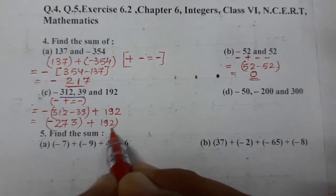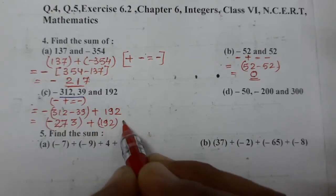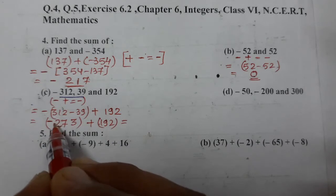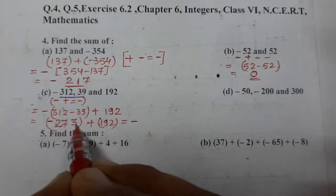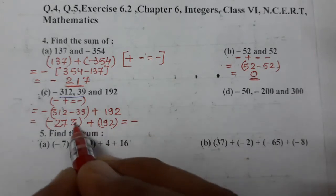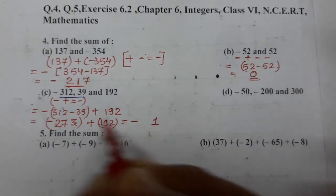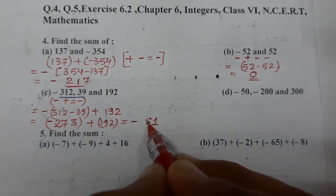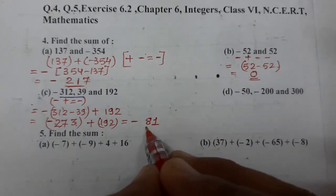Again one minus and one plus — subtract karna hai. After subtracting, jo bada ho uska sign lagao. 273 ki value badi hai 192 se, to minus aayega. Subtract karte hain: 3 mein se 2 gaye 1, 7 mein se 9 — 17 mein se 9 gaye 8, aur 2 mein se 2 gaye 0. So minus 81 is the answer.